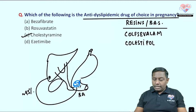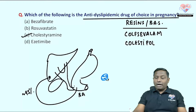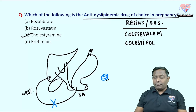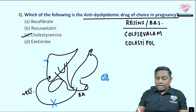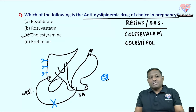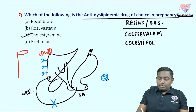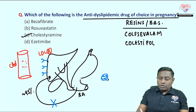After binding, bile acid sequestrants promote excretion of bile acids along with the drug, preventing that 95% reabsorption. This creates an apparent deficiency of bile acid, which causes upregulation of LDL receptors — a mechanism similar to statins — leading to increased uptake of cholesterol from circulation.